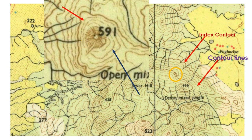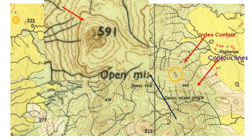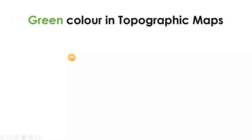Form lines don't show exact height but indicate it with about 80–90% accuracy. For example, if a point in the middle is at 591 meters and the index contour is at 500 meters, the form lines represent intermediate heights of approximately 520, 540, 560, 580 — getting close to 591. Form lines are used in areas where it is very difficult to calculate the exact height, replacing contour lines in those areas.